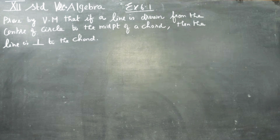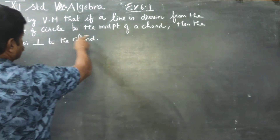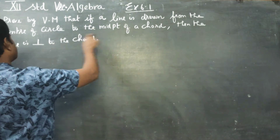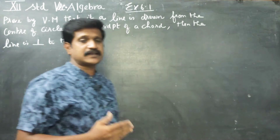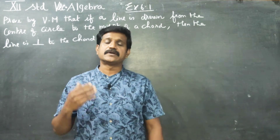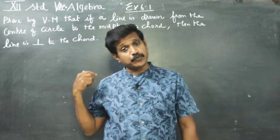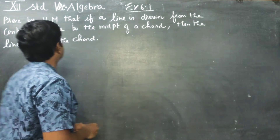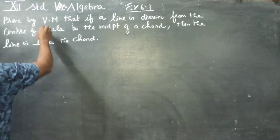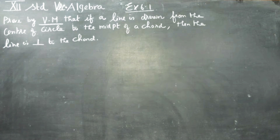This is a 9th standard theorem: if a line is drawn from the center of the circle to the midpoint of the chord, then the line will be perpendicular to the chord. It is 9th standard theoretical geometry, but we will prove it by vector method.